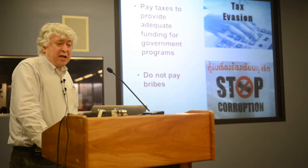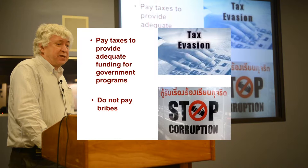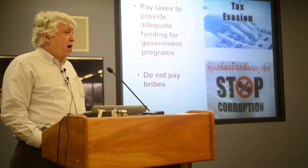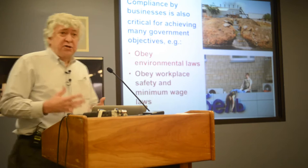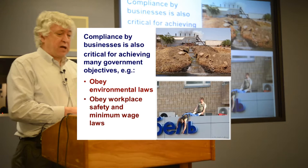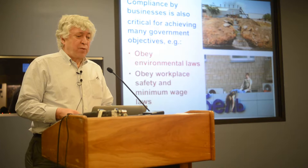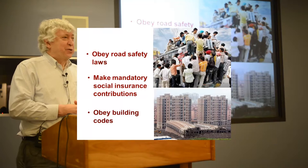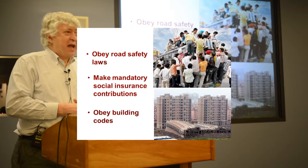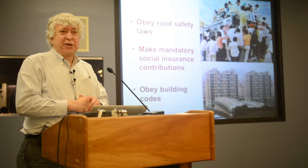Other behaviors you need to change include paying taxes to ensure government has adequate revenues, and not paying bribes to government officials. All of these are behaviors at the individual level where governments have often very ambitious objectives. Compliance by business is also critical for achieving many governmental goals: obeying environmental laws, not polluting, obeying workplace safety and minimum wage laws, obeying road safety laws. The bus company in the top picture there is probably exceeding vehicle requirements.